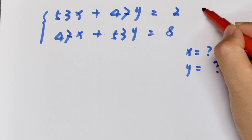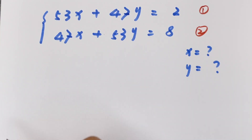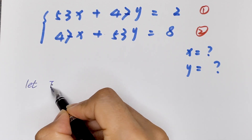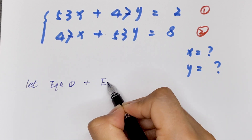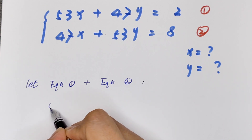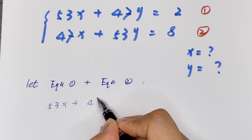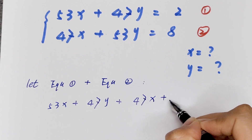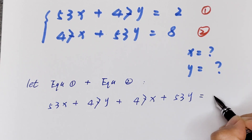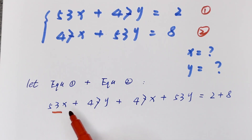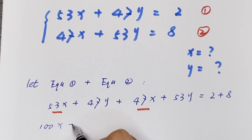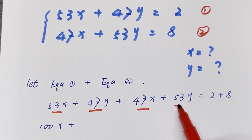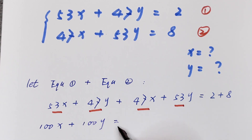We let this equation 1 and this equation 2. Now we let equation 1 plus equation 2: 53x plus 47y plus 47x plus 53y is equal to 2 plus 8. Combining like terms: 53x plus 47x equals 100x, and 47y plus 53y equals 100y, so 100x plus 100y is equal to 10.